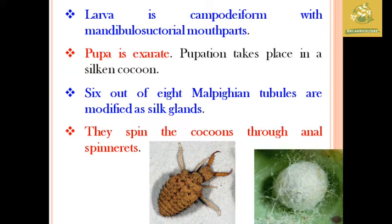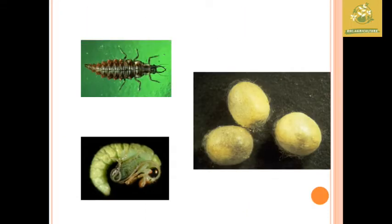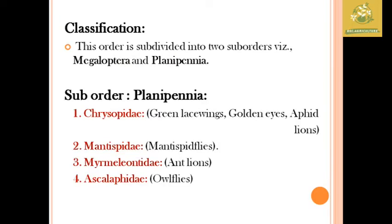While seeing the larval characteristics, they are said to be campodeiform. The larvae have mandibulo-suctorial mouthparts. The pupae are exarate and pupation takes place in a silken cocoon. Six out of eight Malpighian tubules are modified as silk glands in these larval characteristics, and these silk glands are used to spin the cocoon through their anal spinnerets.